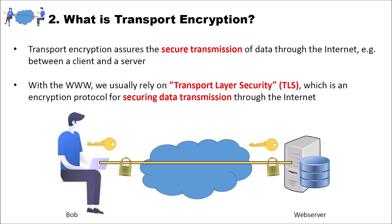Now let's discuss what transport encryption is. Transport encryption assures the secure transmission of data — for instance, through the internet, between a client and a server. We speak of transport encryption since you encrypt the transport — the actual transport layer in the OSI layer model — where you transfer the data. With the World Wide Web, we usually rely on Transport Layer Security, TLS. This is a security protocol for securing data transmission through the internet, and this protocol ensures that our data is encrypted.